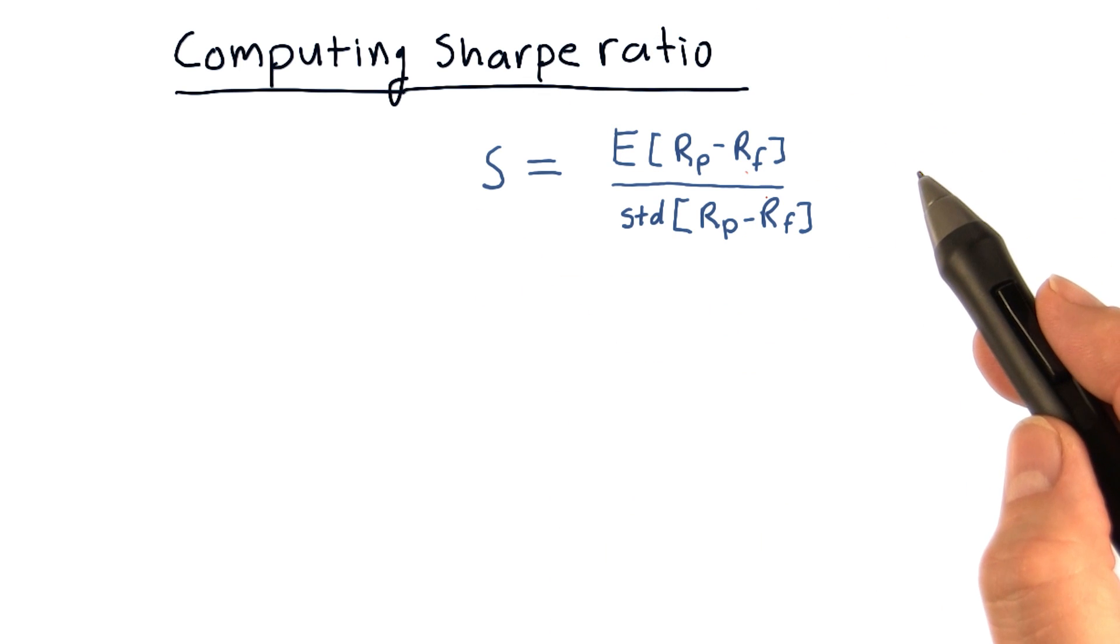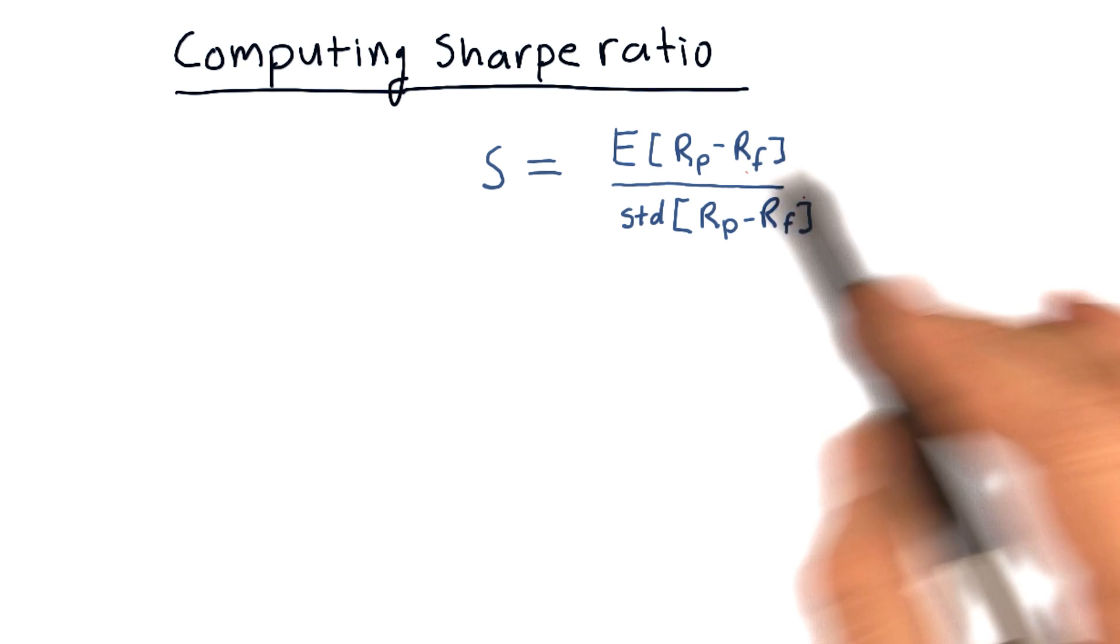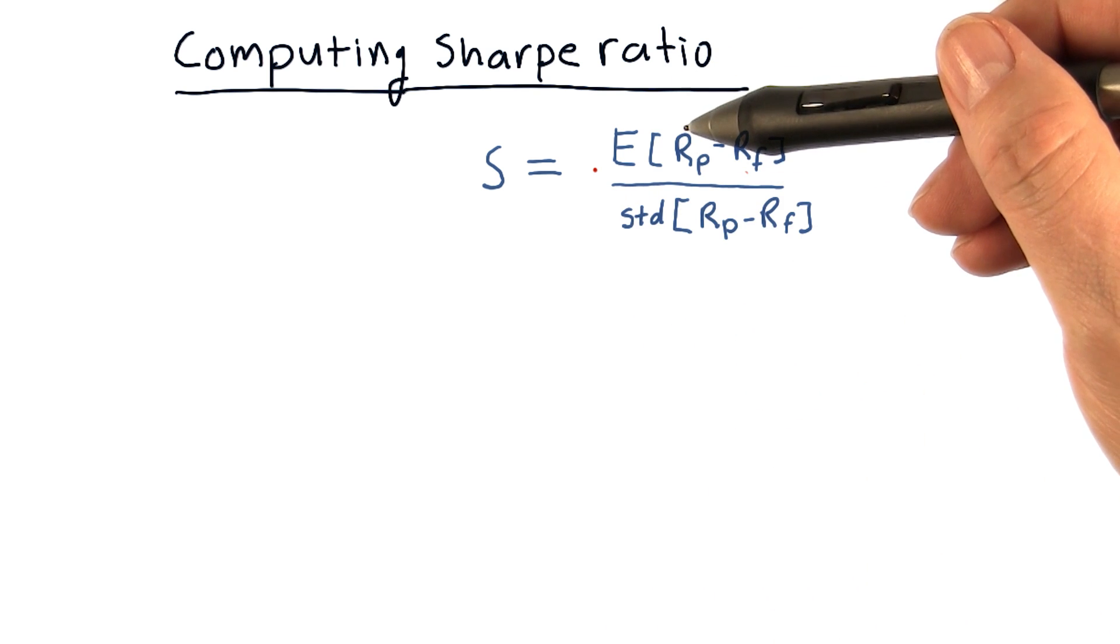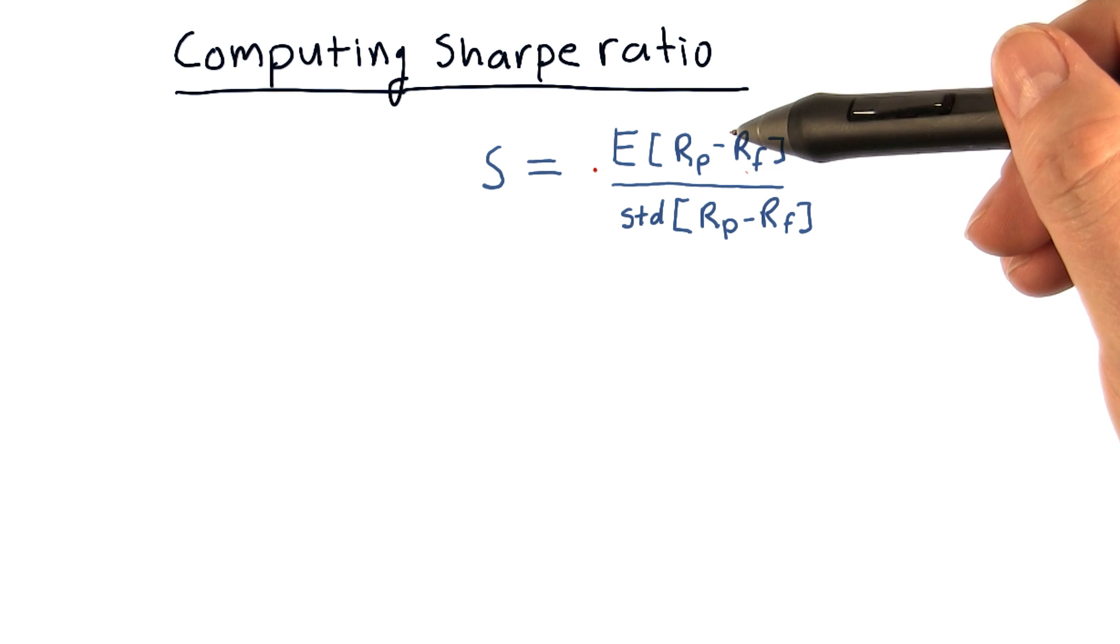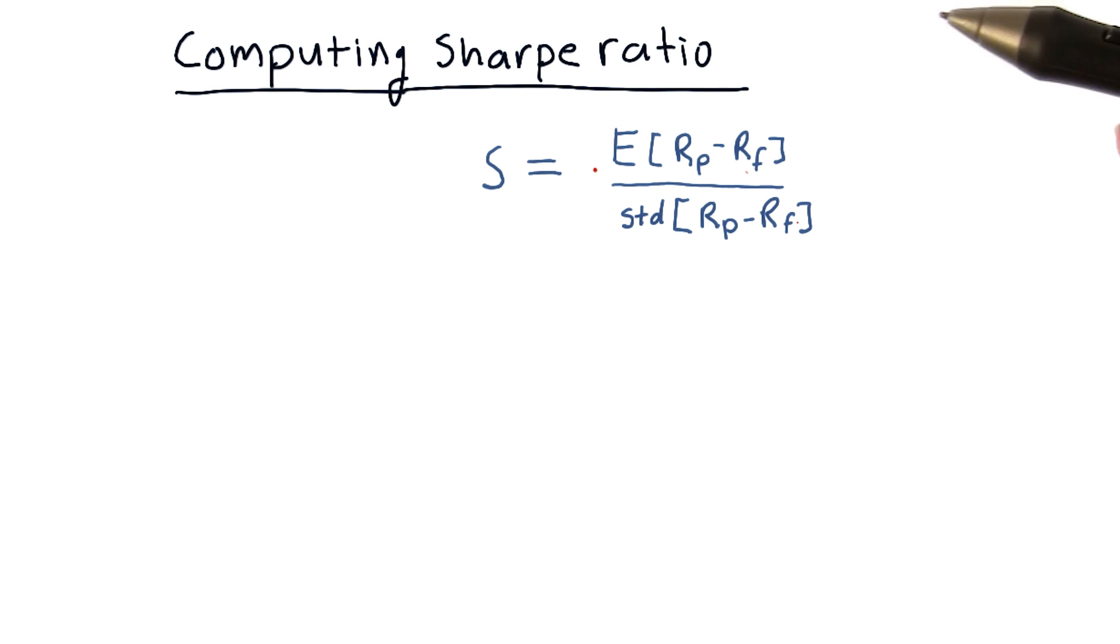Here's the equation for computing the Sharpe Ratio as proposed by William Sharpe himself. It's the expected value of the return on the portfolio minus the risk-free rate of return, divided by the standard deviation of that same difference.